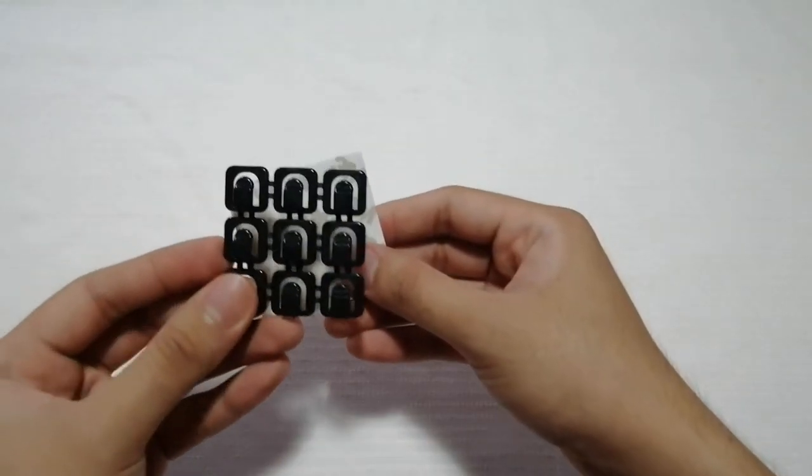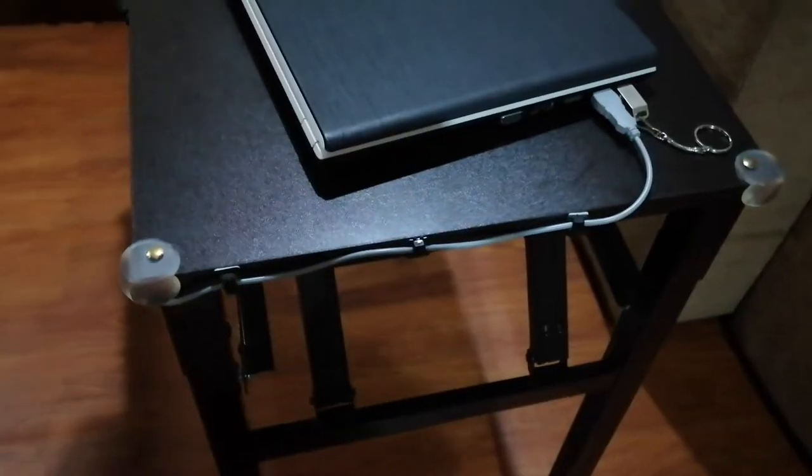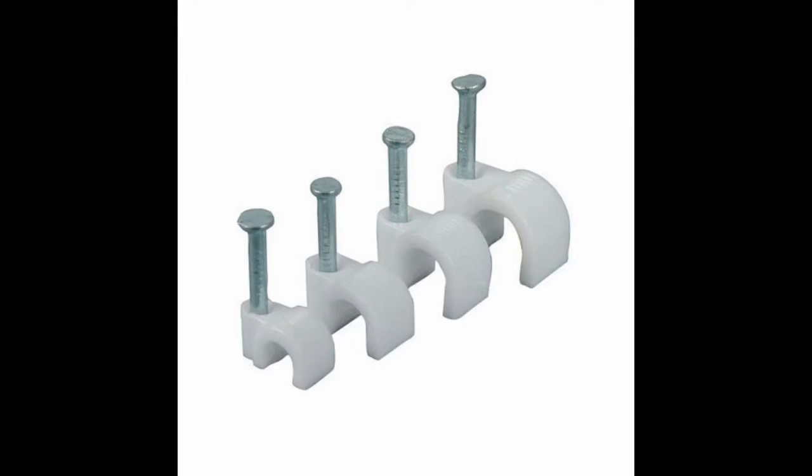Adhesive cable clips. Clips of varying shapes and sizes that bind cables and can be placed on surfaces using pre-applied or aftermarket adhesives. Some even come with a pre-installed nail.